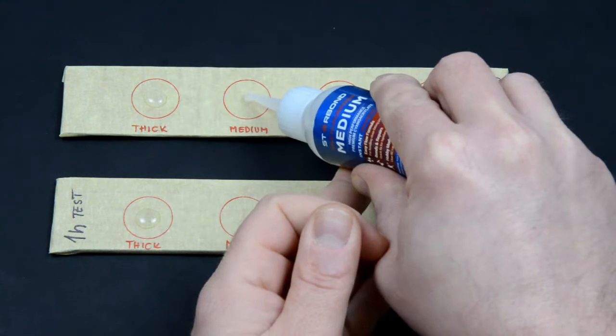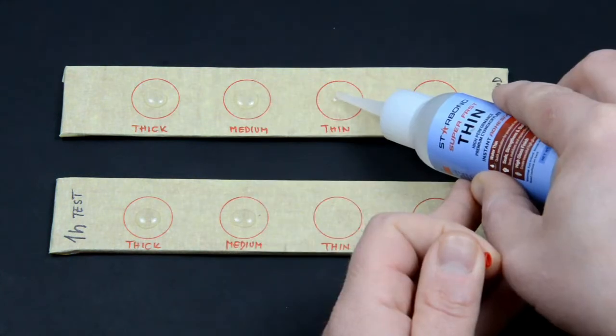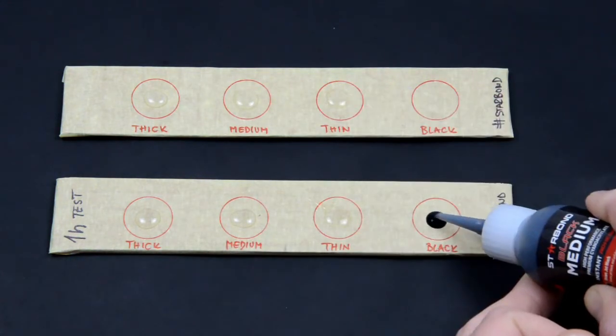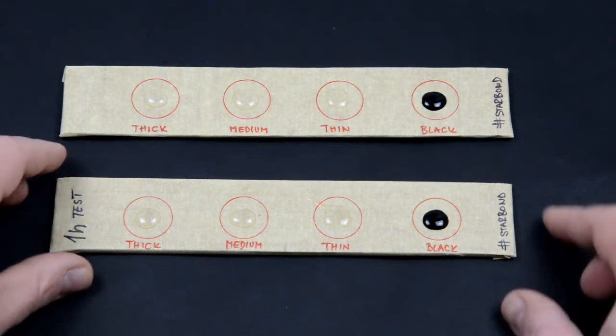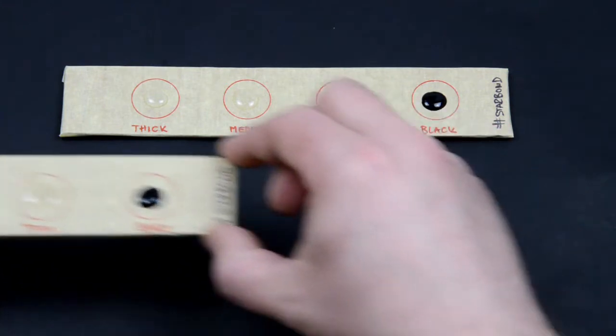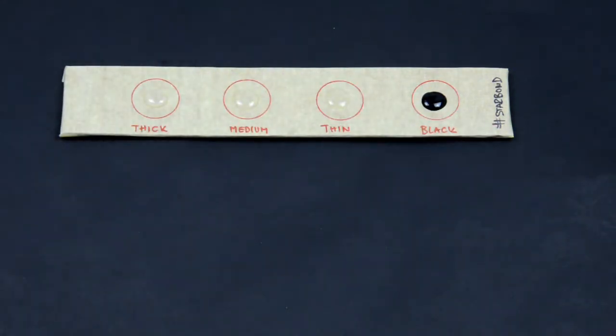I put all four glues on a test tray so we can see how they behave straight from the bottle. I will let the other tray sitting in the corner for an hour or so and we will see what will happen at the end of the video.